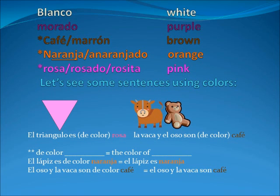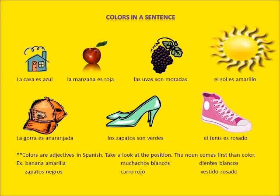The phrase 'de color' means 'the color of.' For example: el lápiz es de color naranja. You see, naranja stays just like that even though el lápiz is a masculine word. You can also say el lápiz es naranja — the short form. Same with la vaca y el oso son café.